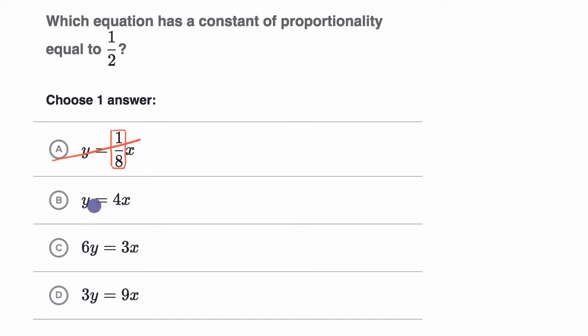Equation B right over here clearly has a constant of proportionality of four, not 1 half. So we could rule that one out. The constant of proportionality for equation C, if we want to solve for y, we could divide both sides by six.